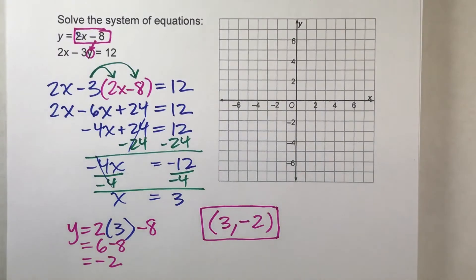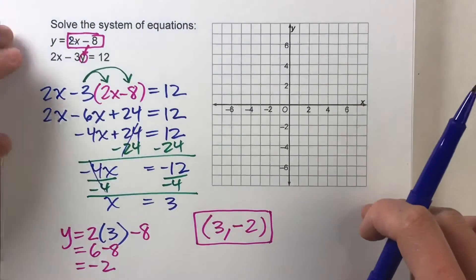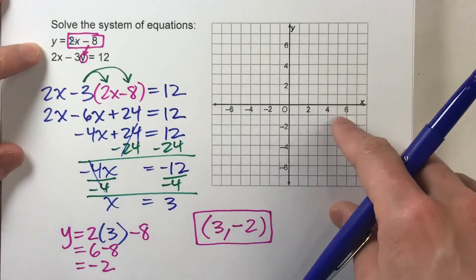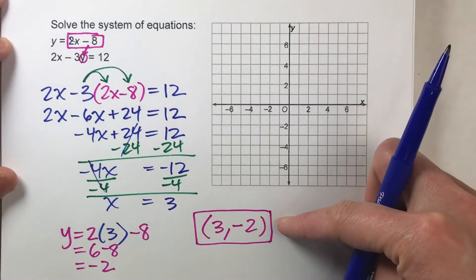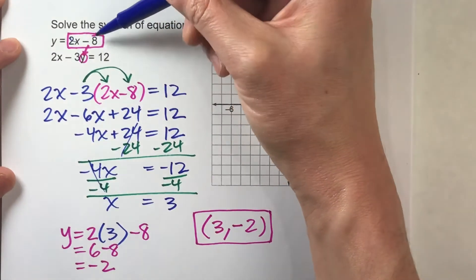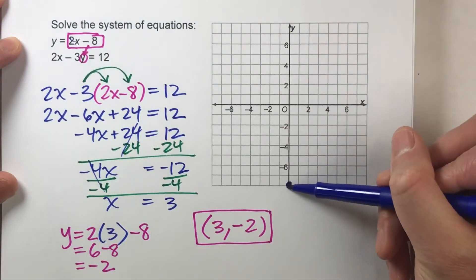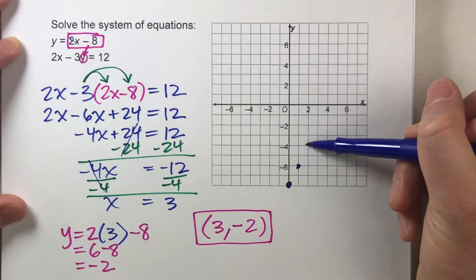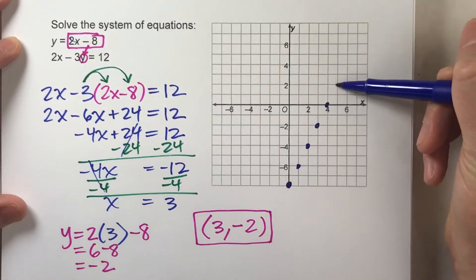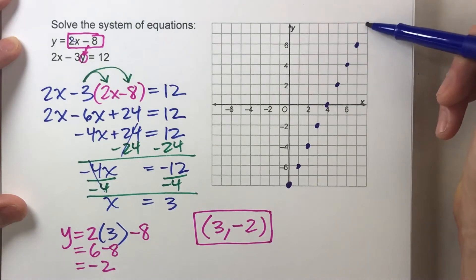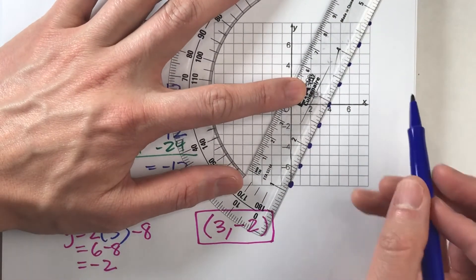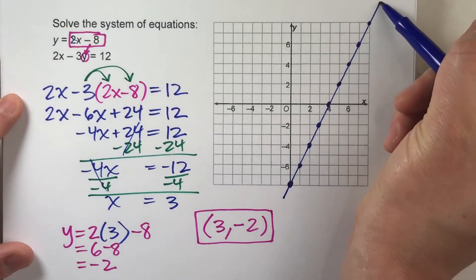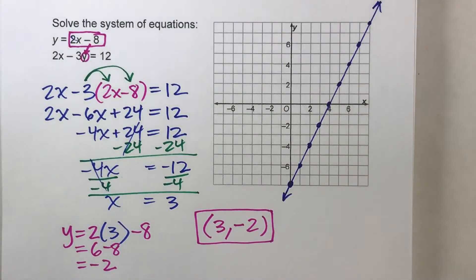Let's talk about how to do it using graphing. All we need to do is graph these two equations, and wherever the two lines intersect will be the solution to the system — it should be the same as what we just found. For y equals 2x minus 8: negative 8 is my y-intercept, so on the y-axis here's negative 8, way at the bottom. My slope is 2, so I'm going to go up 2, right 1, repeatedly across the grid. I'm going to use a straight edge to draw this in to be as accurate as possible, because if the lines are crooked I'll get the wrong answer. There's the first one done.